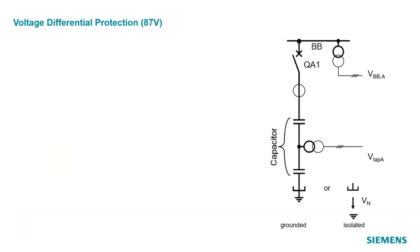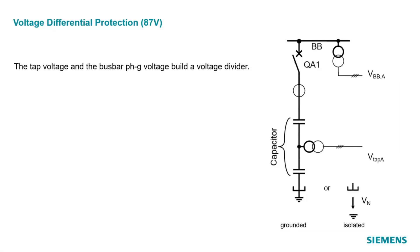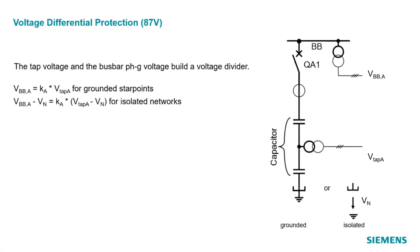The voltage differential protection is suitable for capacitor banks with both grounded and isolated star points. The tap voltage and the bus bar phase-to-ground voltage for each phase build a voltage divider. The bus bar phase-to-ground voltages can be calculated by multiplying the tap voltages with a quotient of the capacitances, Ka. If the star point is isolated, the neutral voltage also needs to be considered. The differential voltage V_divA for phase A is set up according to the shown formulae, and for phases B and C the formulae are equivalent. If the system is balanced and there is no faulty capacitor element, the differential voltage is exactly zero. In reality, manufacturing tolerances, temperature drift, and aging can cause a differential voltage. Depending on the topology and number of capacitor elements, the measured voltage difference for a single defect can be very low, and the operational differential voltage could disturb and mislead the differential protection.